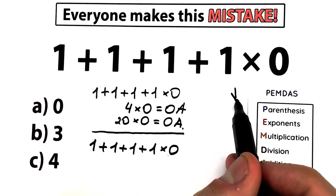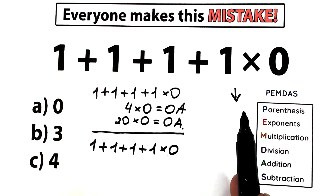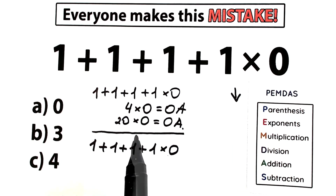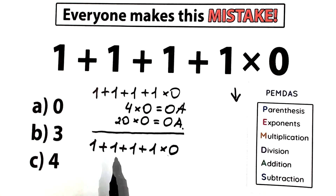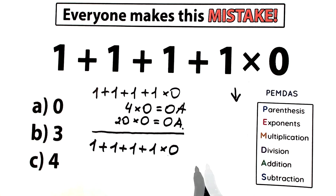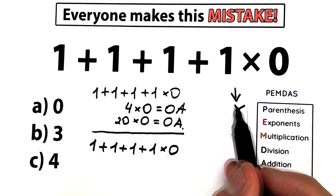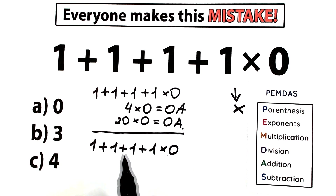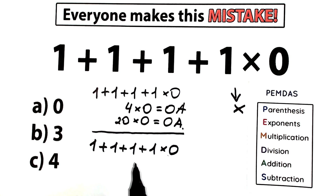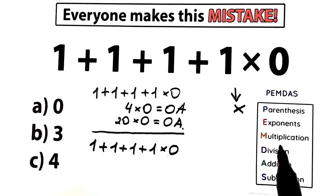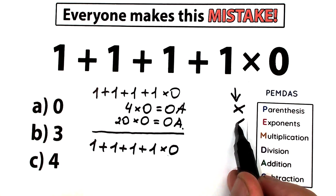The first step according to PEMDAS is parentheses. We need to scan where we have parentheses in our case. We don't have any brackets or parentheses, so we skip this part. What about exponents? I don't see any exponents here — no squares, no cubes — so we skip this part as well.